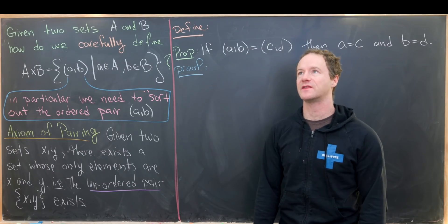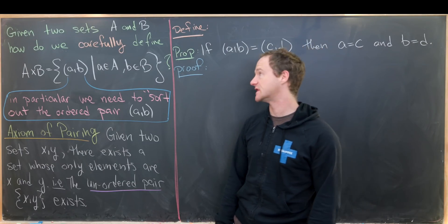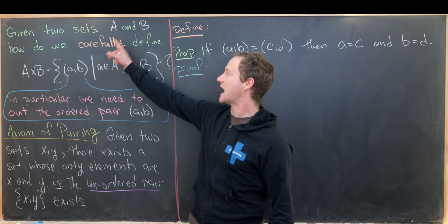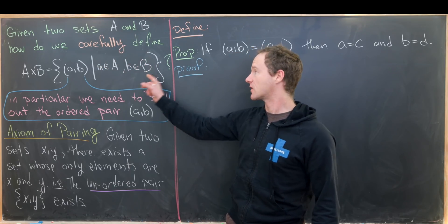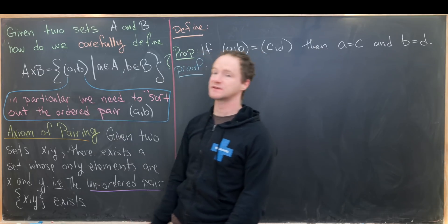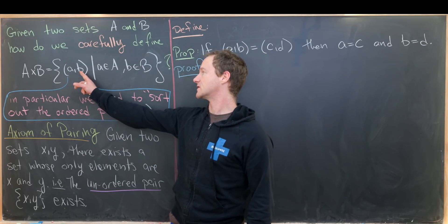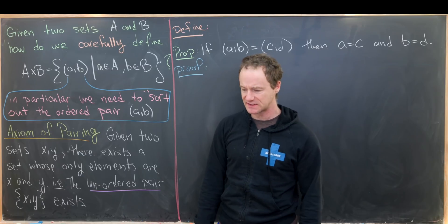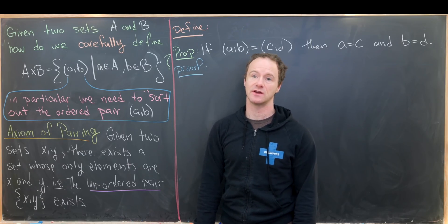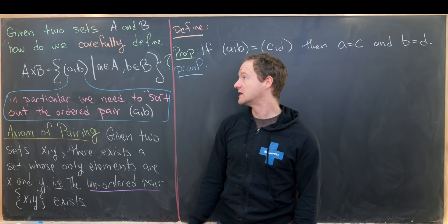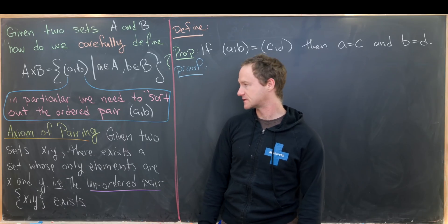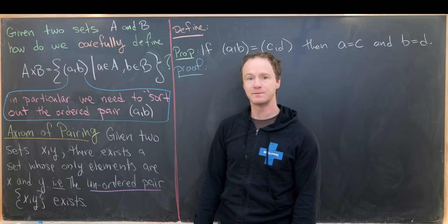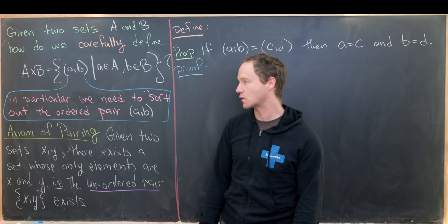Today we're going to look at the subtle problem in set theory of defining the Cartesian product of two sets. Given two sets A and B, how do we carefully define the Cartesian product A cross B? It's generally defined as all ordered pairs (a, b) such that a comes from A and b comes from B. This may not seem problematic, but if you look at the axioms of set theory, it's actually tricky to define such an object. The trickiest part is to define the ordered pair. Today we will sort out the definition of this ordered pair.